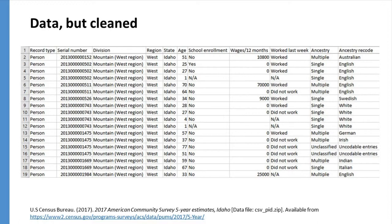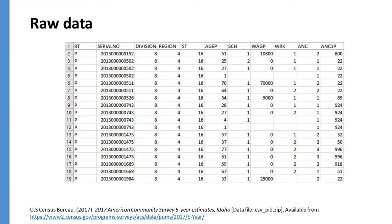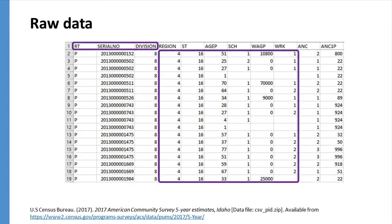However, we can also see that these data have been simplified or cleaned because we can understand the column headings and cell values at first glance. If we compiled and analyzed this data, we could create a statistical output, such as a chart or visualization. This last screenshot is also an example of raw micro data and includes the exact same data that we saw on the previous slide. However, we would need to find more information about the variables and potential answer options to fully understand this data.